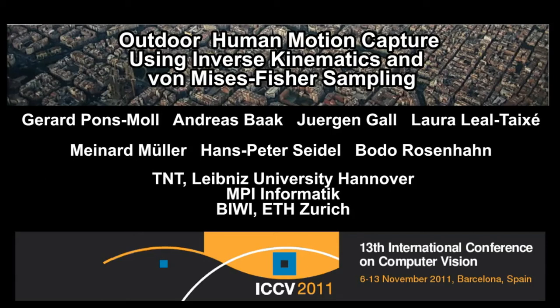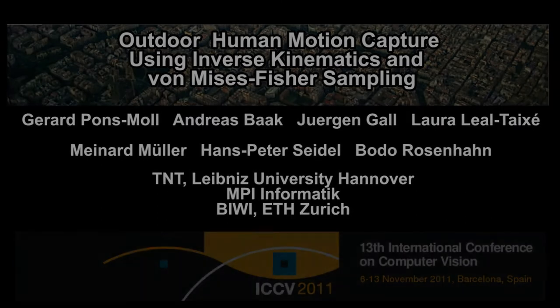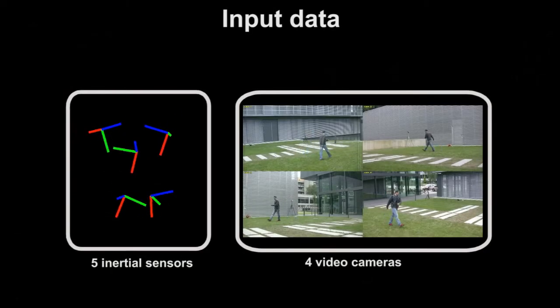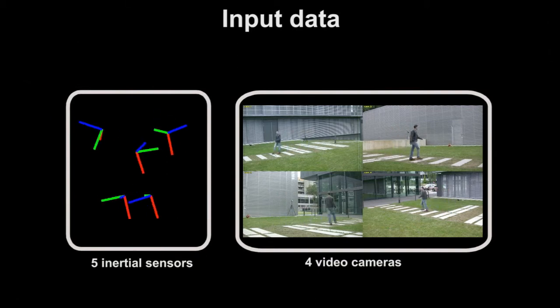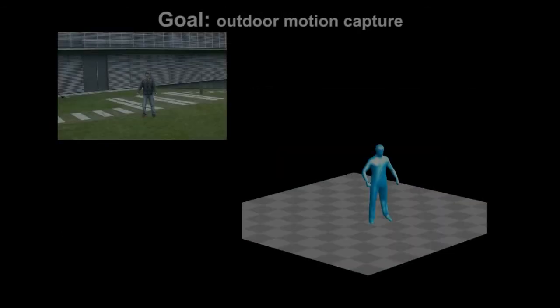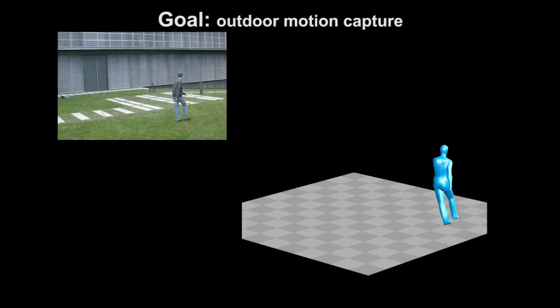We present a probabilistic optimization framework for high quality motion capture in outdoor scenarios. The input data consists of a set of unsynchronized consumer cameras and five inertial sensors attached to the body extremities. We obtain high quality animations comparable to those obtained in controlled indoor environments.